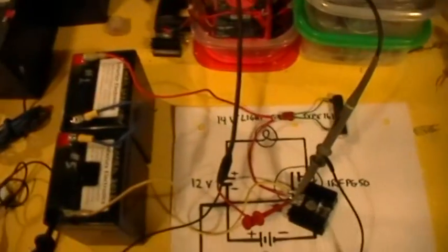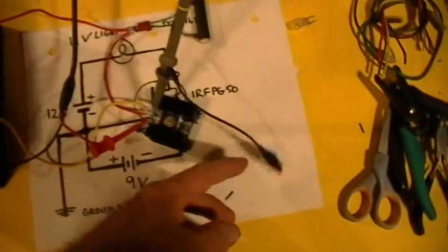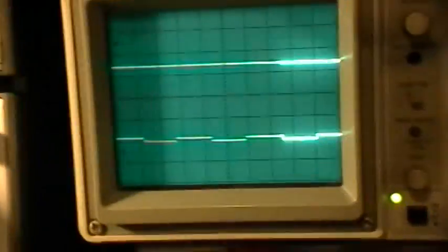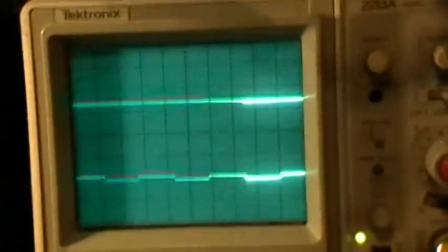Alright, I'm going to leave the scope probe lead dangling. Now let's look at what's happening. The bottom trace is the function generator. The top trace is the MOSFET drain. So let's check where the baselines are.